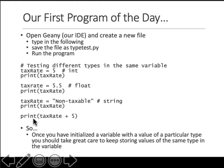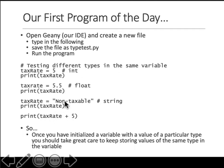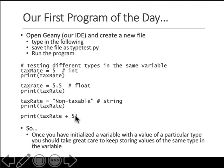Now if you print something like tax_rate plus 5, the compiler has to compute the value of 'non-taxable' plus 5. See what error you get, because you're trying to add a numeric value to a string. See if the compiler allows you to do that.